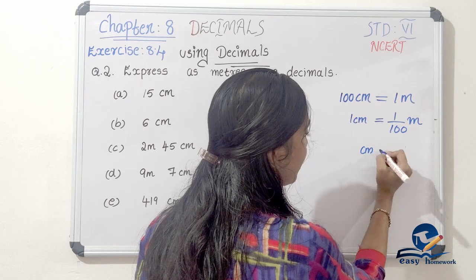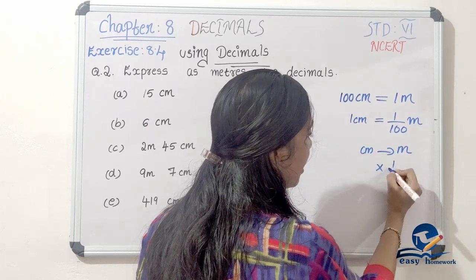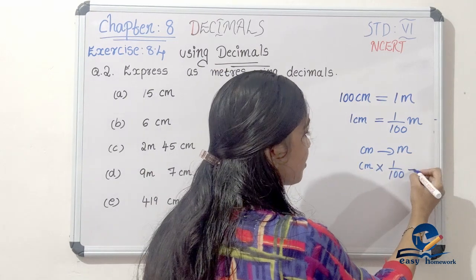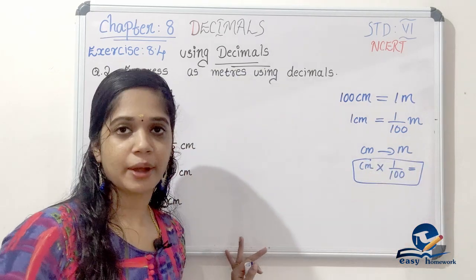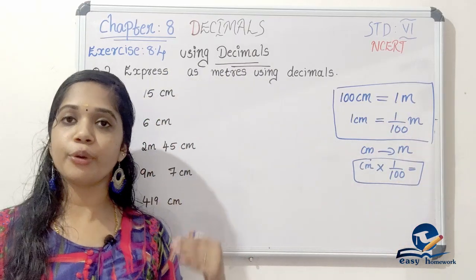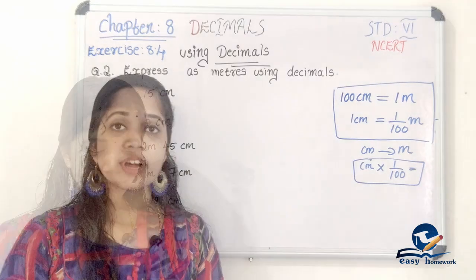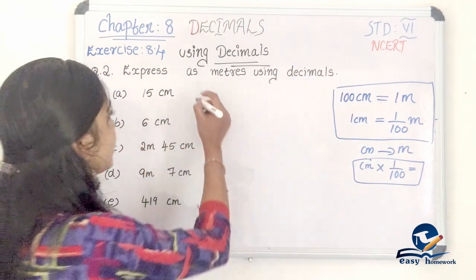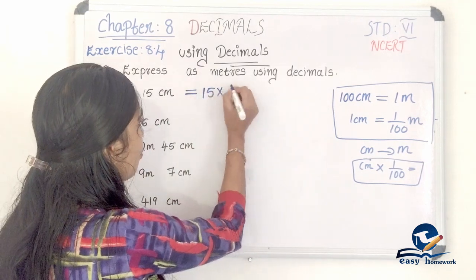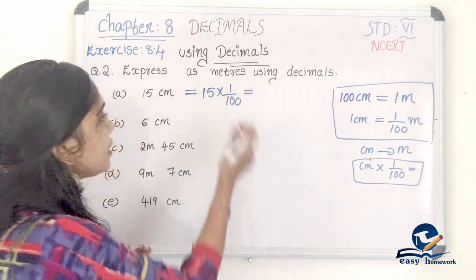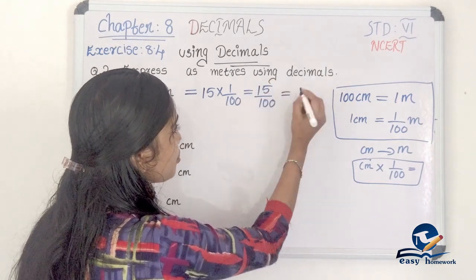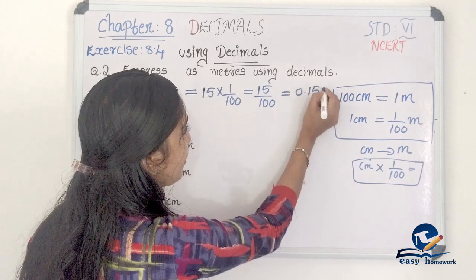1 centimeter equals 1 by 100 meters. So to convert centimeters to meters, we multiply by 1 by 100. The first quantity is 15 centimeters. 15 into 1 by 100 is equal to 0.15 meter.